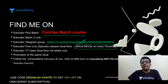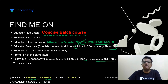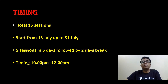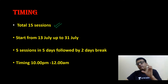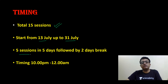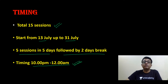Follow me on Unacademy educator and click the bell icon on the Unacademy PG Life YouTube channel. You can use my code Dr. Sanjay Khatri to get an additional discount. The concise course on pediatrics for NEET PG 2021 starts from 13th July to 31st July — whole pediatrics covered in 15 sessions including neonatology, growth and development, endocrinology, genetics, metabolic syndrome, GIT, respiratory, and cardiovascular. Five sessions per day followed by a two-day break, timing 10 PM to 12 midnight, two hours each session.